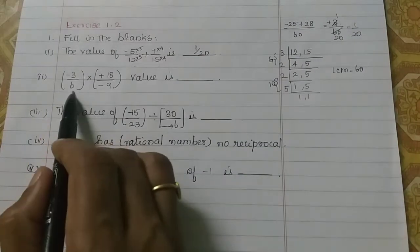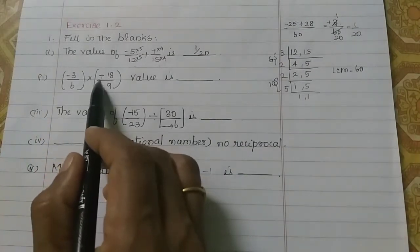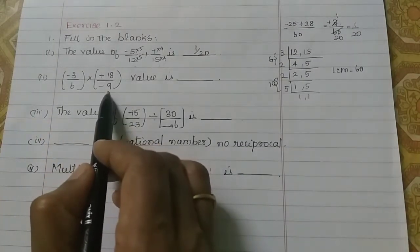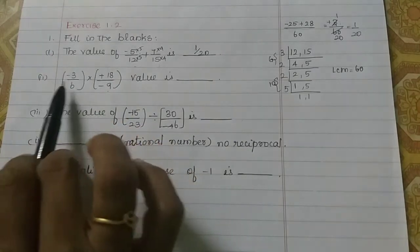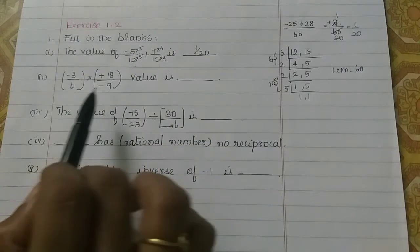So, next one, minus 3 by 6 into plus 18 by minus 9. That's how it is. Now, this is into. So, into, we will simplify.